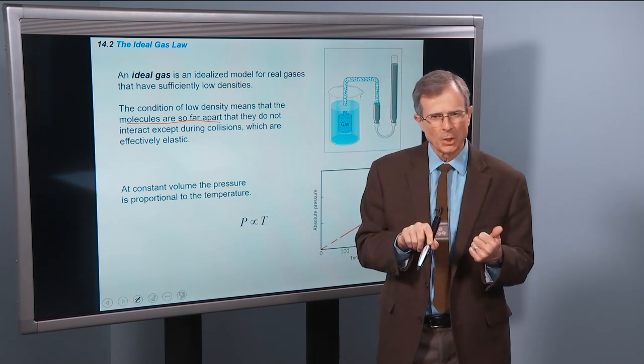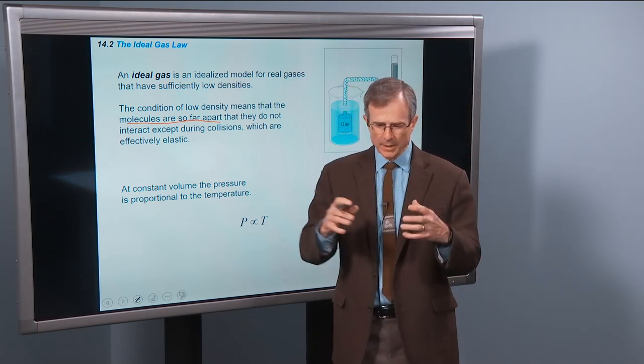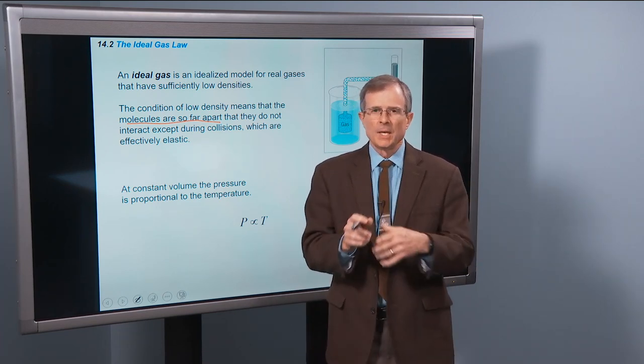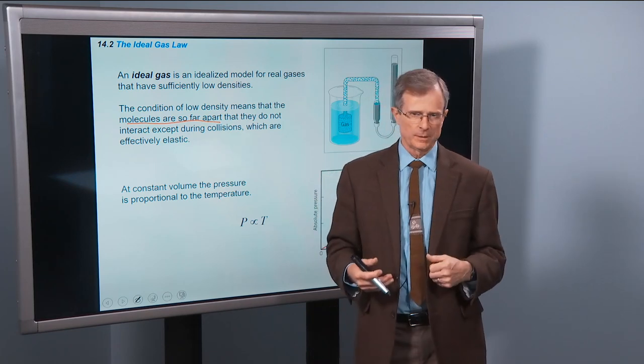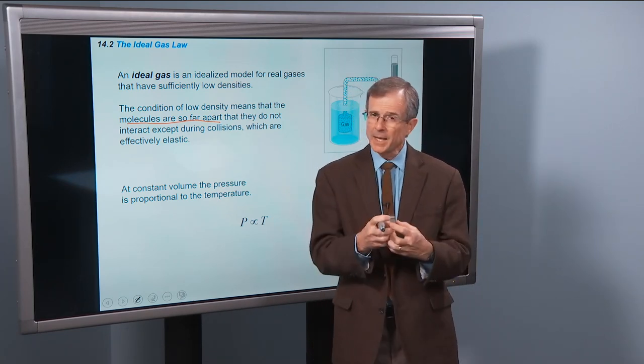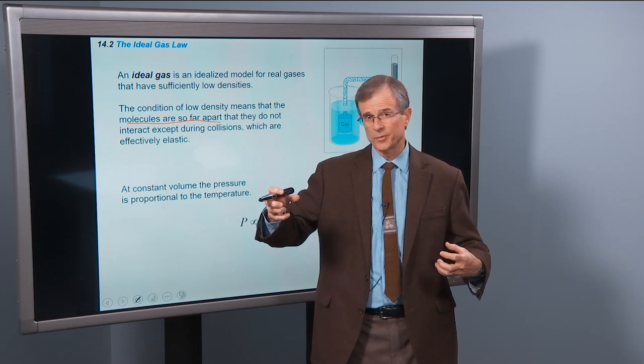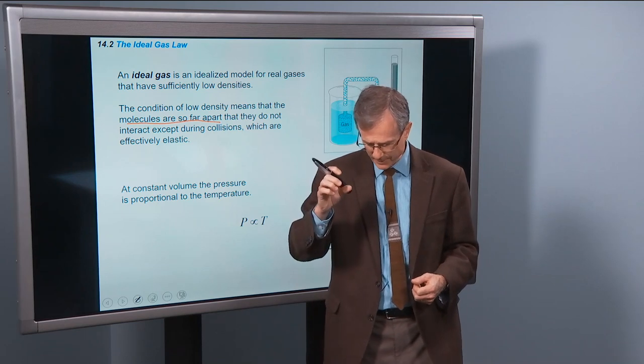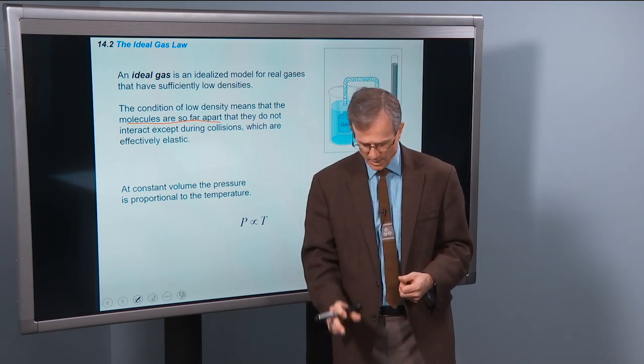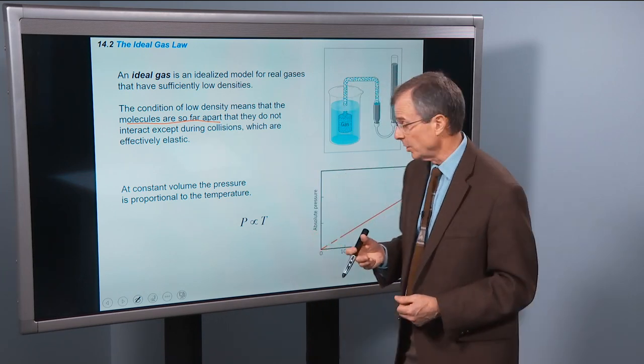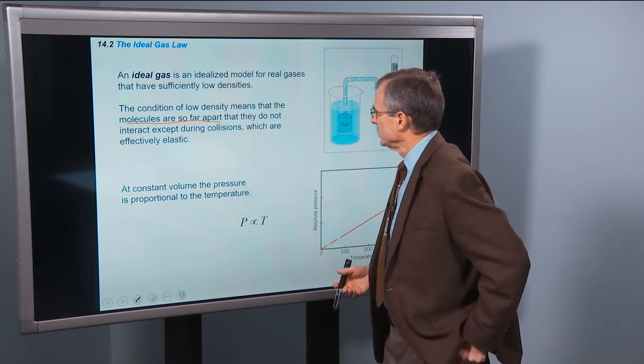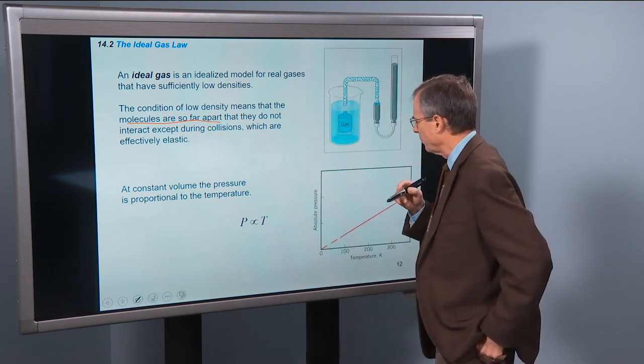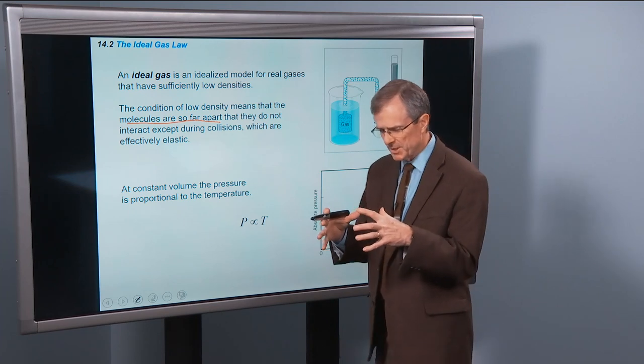And the assumption is that those collisions are elastic collisions. We talked several chapters ago about elastic versus inelastic. A totally inelastic collision is one where they stick together after the collision. And elastic collision is one in which the kinetic energy is conserved. So they bounce off of each other hard like a ball that bounces really well and comes off the floor and comes back up, at least very close to where it started.